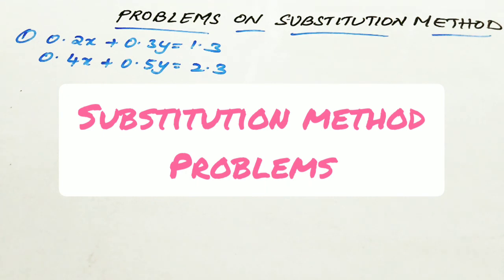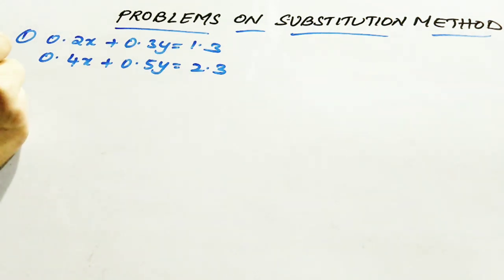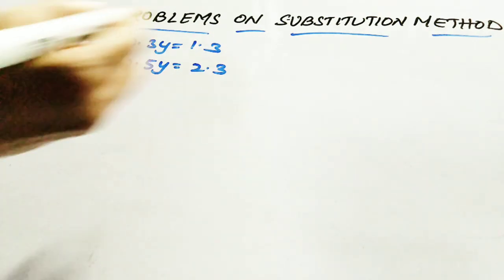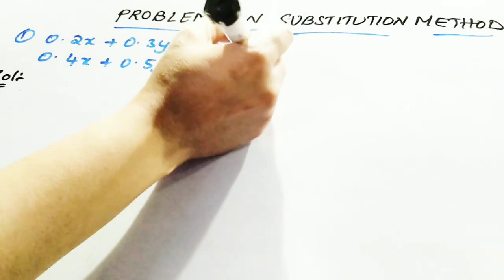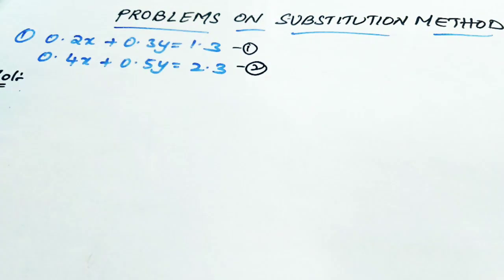The first problem: 0.2x plus 0.3y equal to 1.3, and 0.4x plus 0.5y equal to 23. Consider the first equation as equation 1 and the second as equation 2.